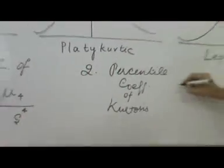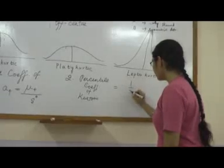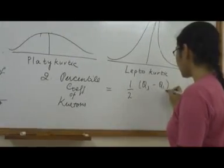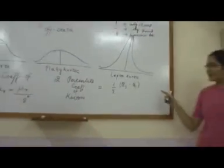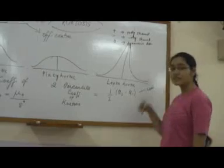This one uses percentiles. The numerator is half of Q₃ minus Q₁. Those are quartiles. This is nothing but the semi-interquartile range, which you must have studied under dispersion.